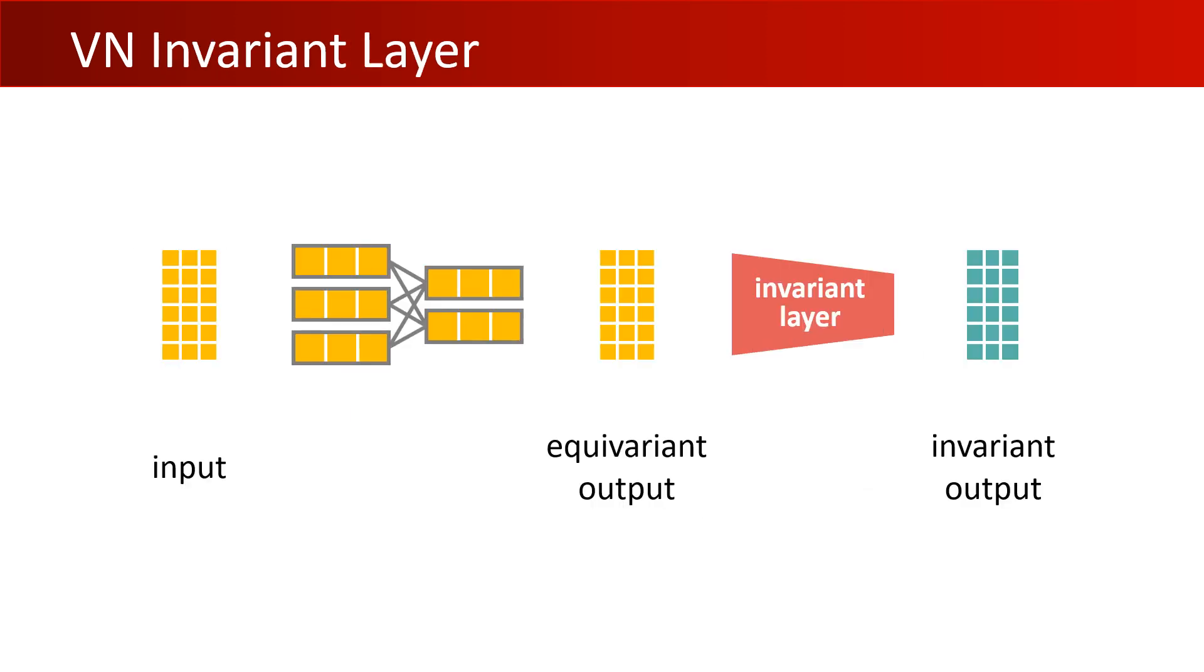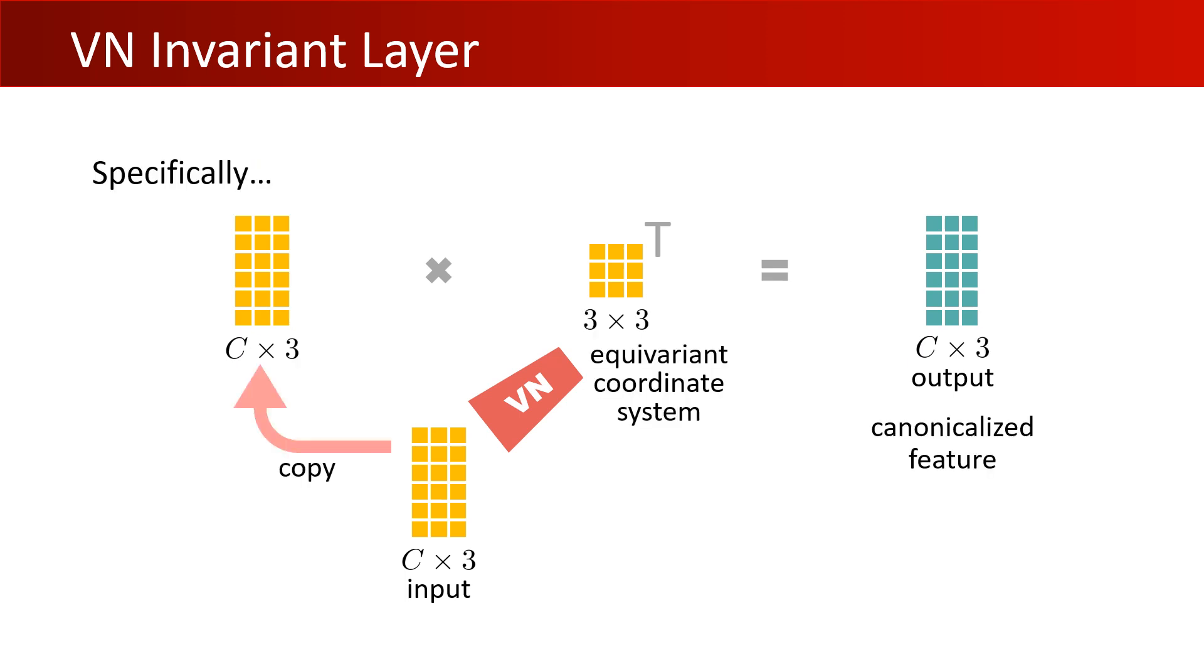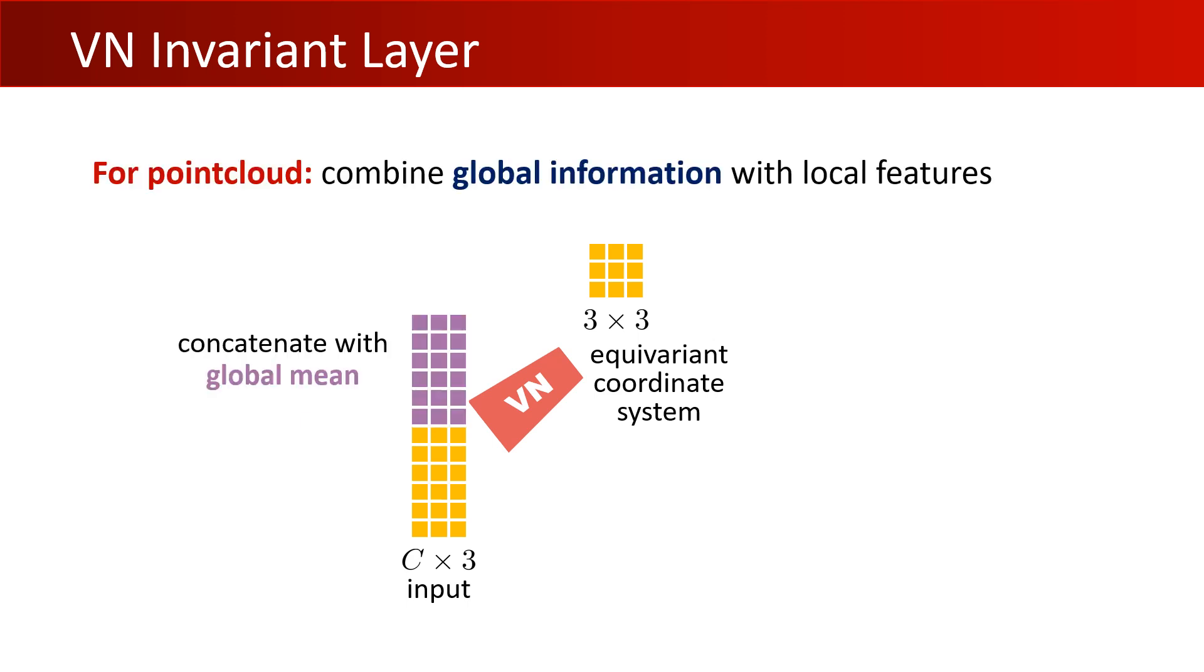We now introduce our invariant layer, which can be appended as needed to the output of the equivariant VN layers. The V2R approach uses the idea that the product of an equivariant signal by the transpose of an equivariant signal is rotation invariant. Specifically, we can produce a coordinate system T from input feature V, and read V in this coordinate system. In practice, when considering a set of equivariant vector-list features, we concatenate each feature with a global mean, and then produce a matrix T_m for each element with a shared vector neuron MLP.